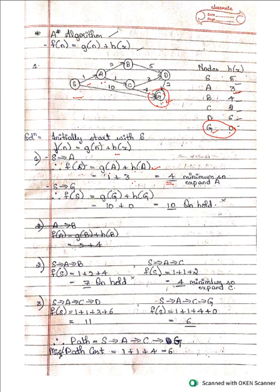Comparing f(n) for S→A (which is 4) and S→G (which is 10), we select the minimum value. So we keep S→G on hold and expand S→A, since there are many routes to the goal and we must choose the best minimum-cost path.